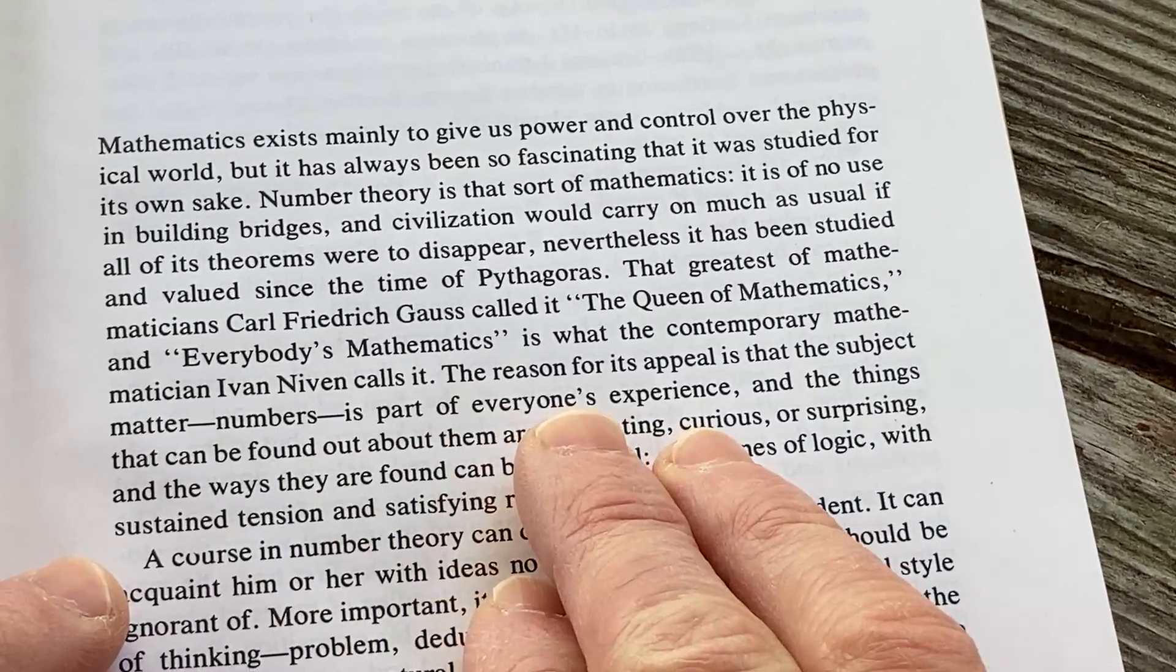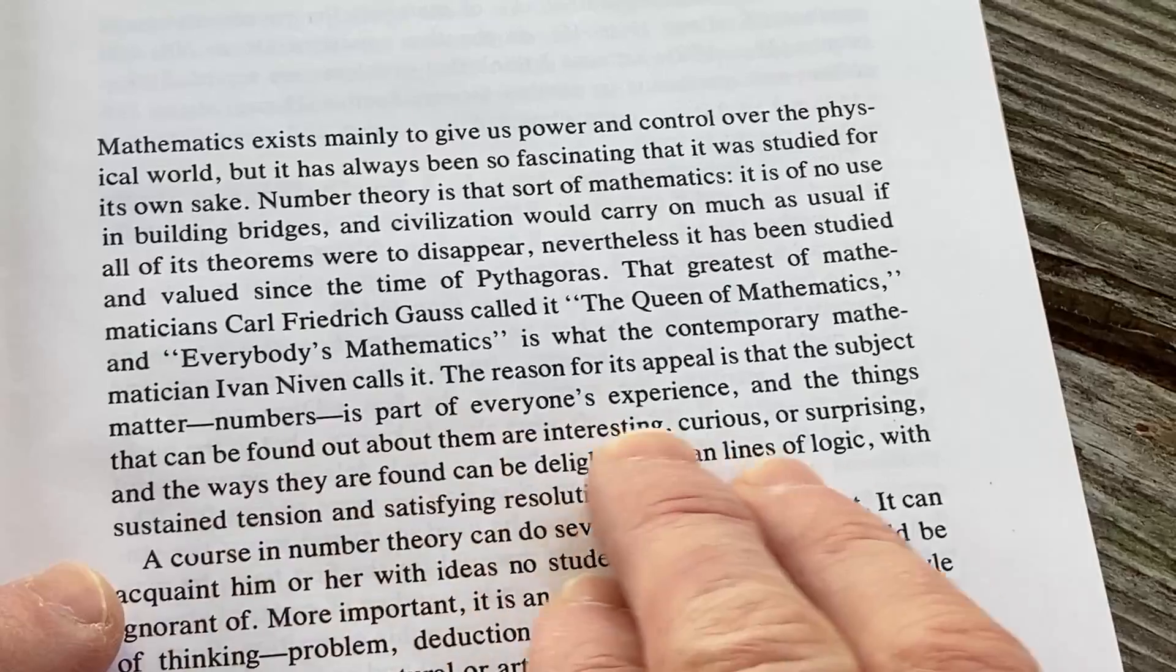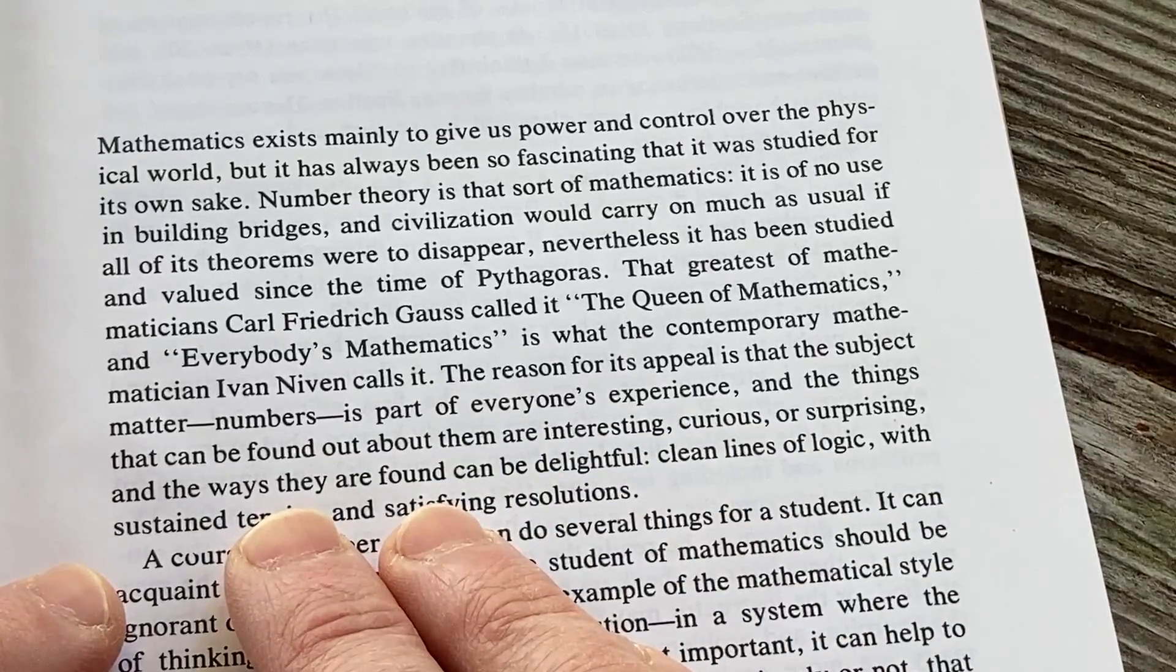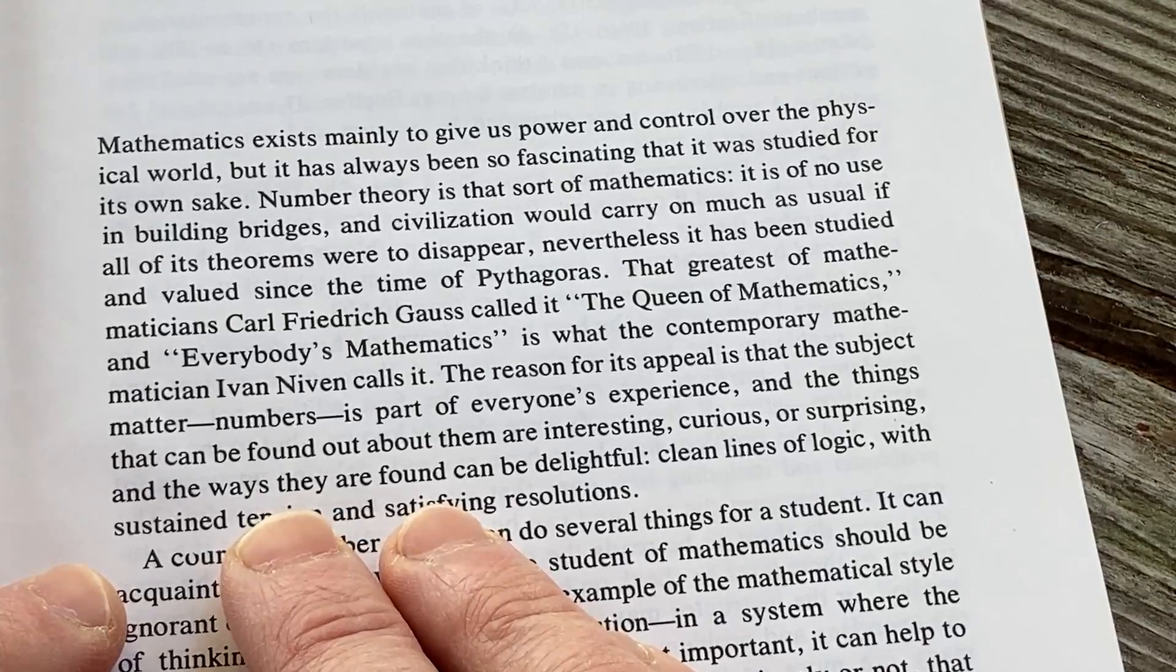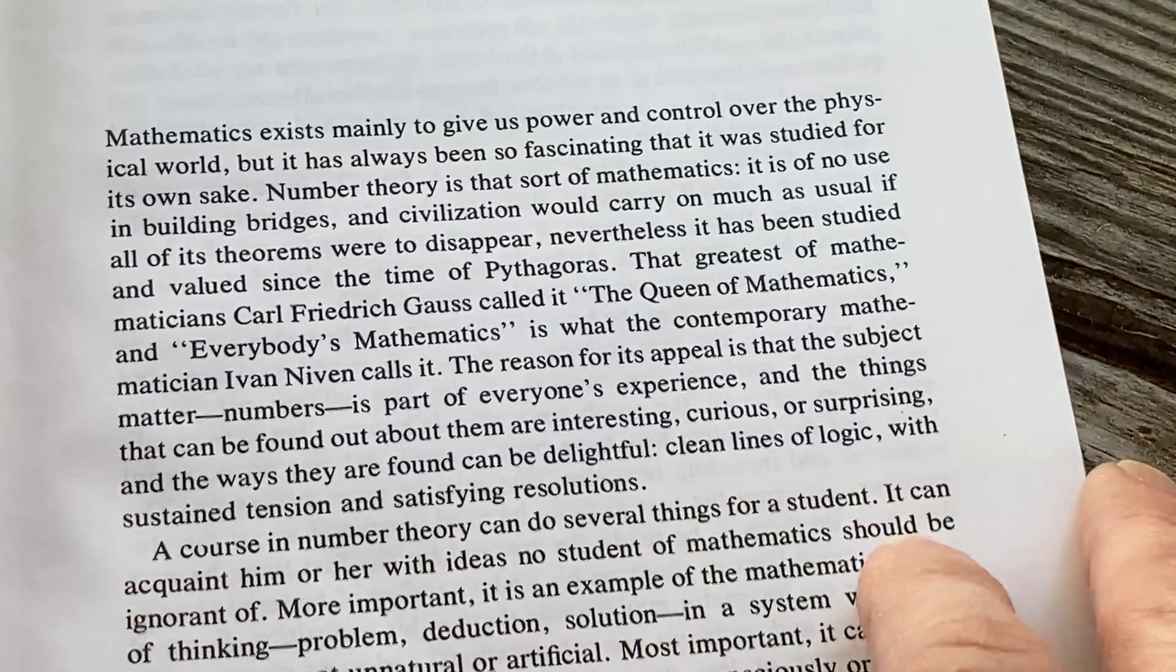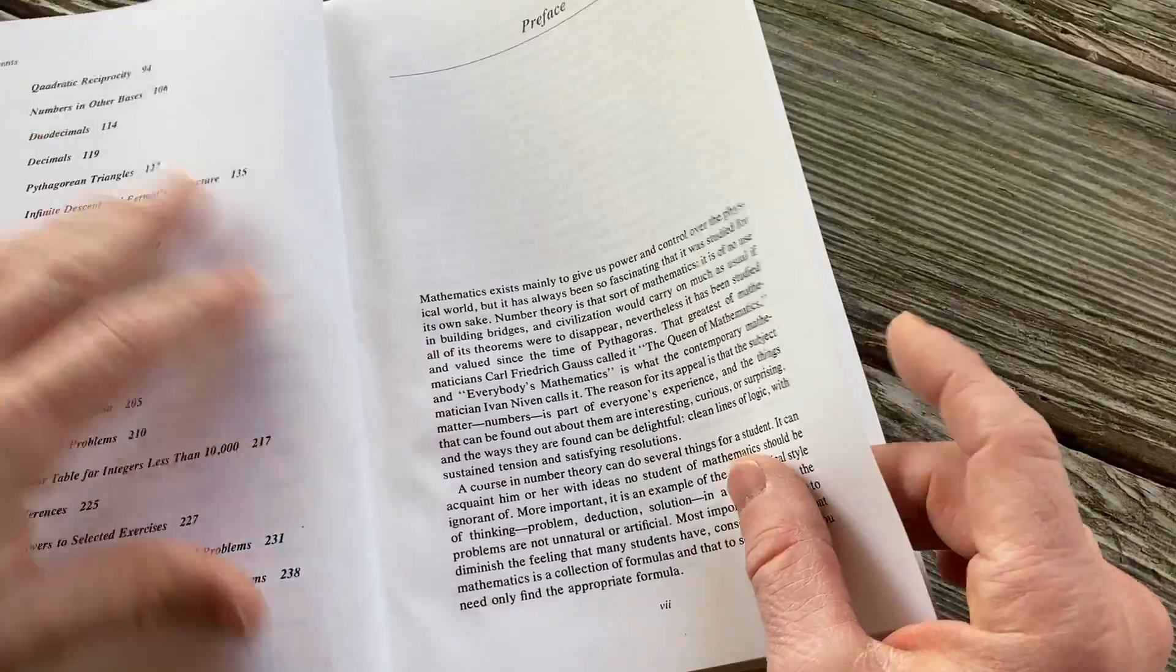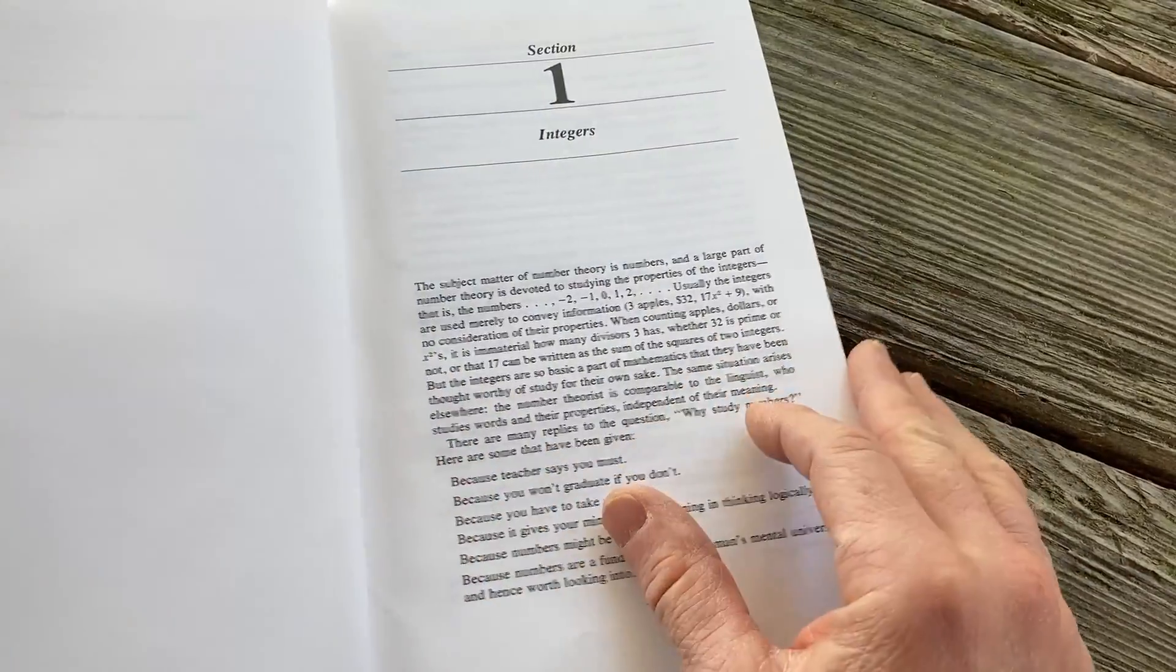The reason for its appeal is that the subject matter, numbers, is part of everyone's experience. And the things that can be found out about them are interesting, curious, or surprising. And the ways they are found can be delightful, clean lines of logic with sustained tension and satisfying resolution. The feeling you get when you write a beautiful proof and it all makes sense. Number theory proofs can be quite elegant.